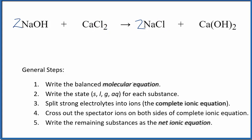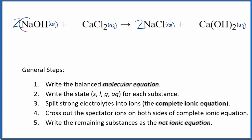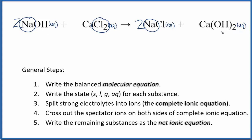Now we can work on the net ionic equation. We do that by writing the states for each substance. Compounds with sodium in them are very soluble. General compounds with the chloride ion are also soluble. So all of these compounds are soluble — that's why we have AQ. Calcium hydroxide, just like sodium hydroxide, is considered a strong base, so we split it apart into its ions and consider it a strong electrolyte. So everything is soluble and everything is aqueous.